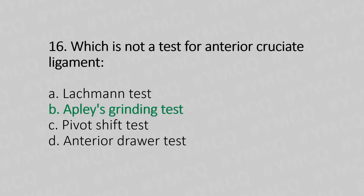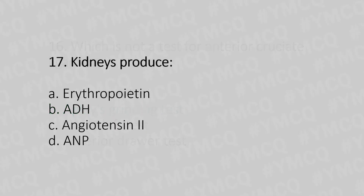Question 17: Kidneys produce — Option A: erythropoietin. Option B: ADH. Option C: angiotensin 2. Option D: ANP. The answer is option A — erythropoietin.